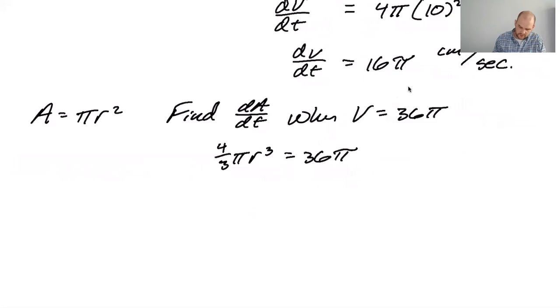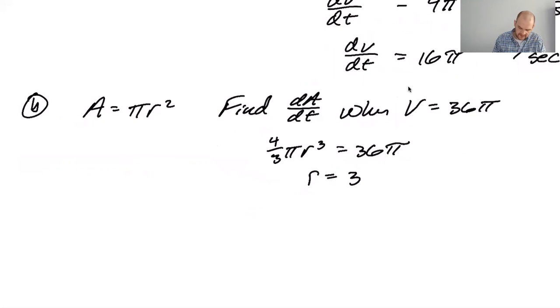All right, so then 4/3 π r cubed is 36π. My fear is that they're going to throw some garbage number at us. All right, so the π's divided out, 36 divided by 4 is 9, times 3 is 27, cube root of 27 is 3. So r is 3. Okay, so this is not seeming that bad, actually.